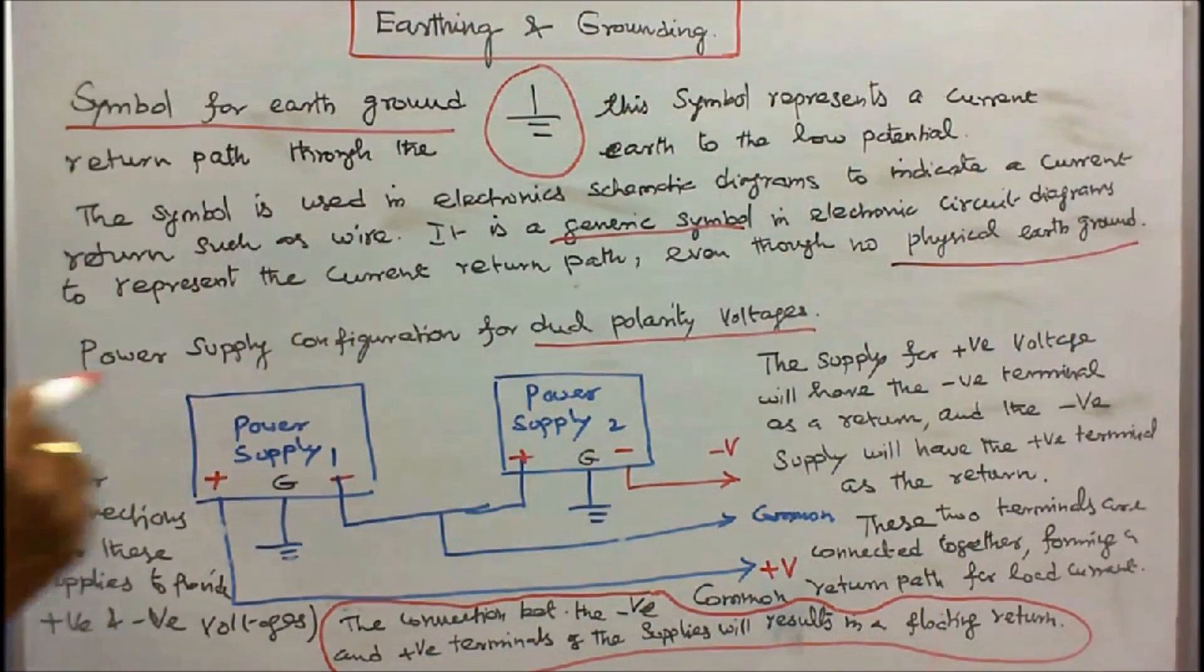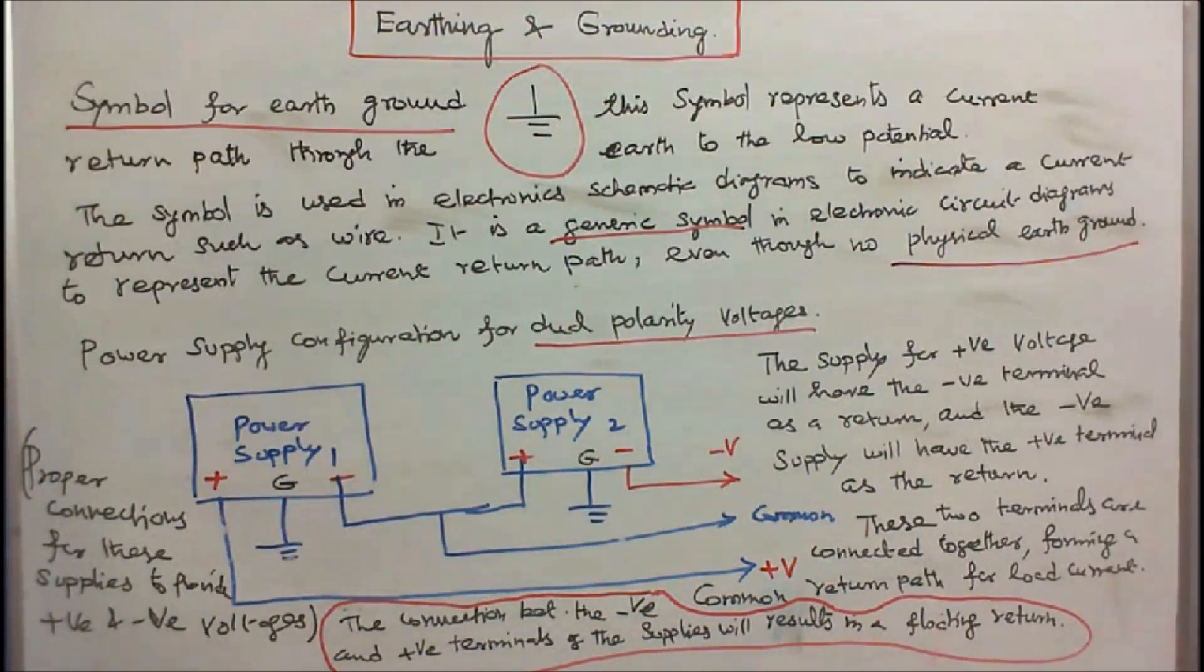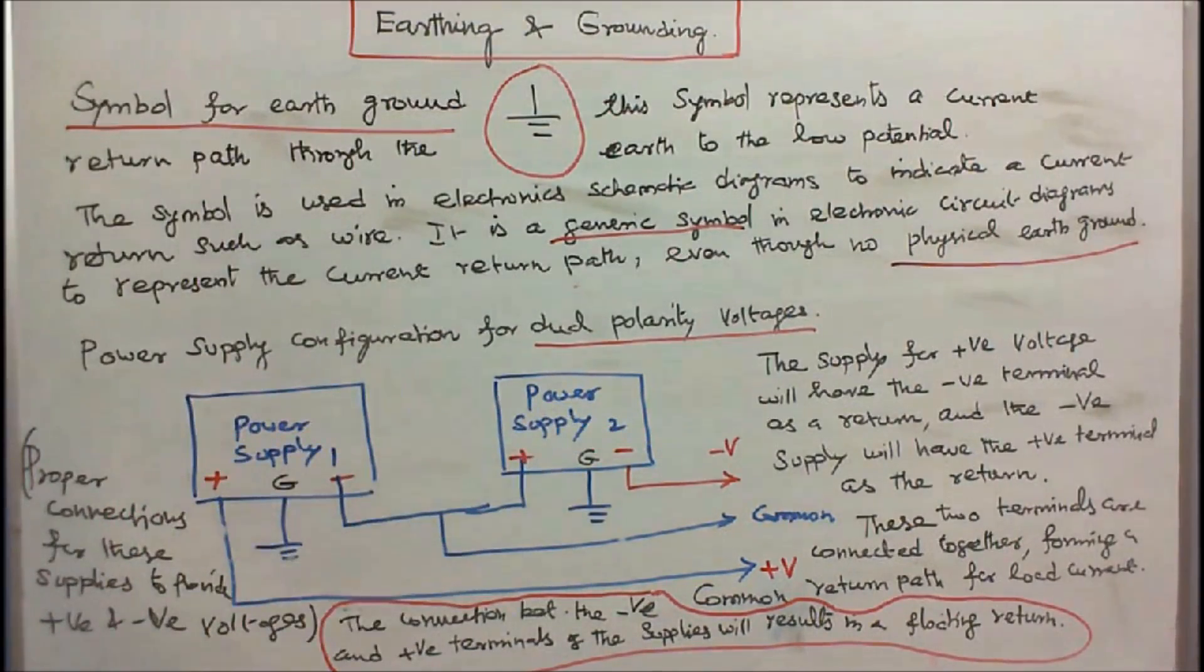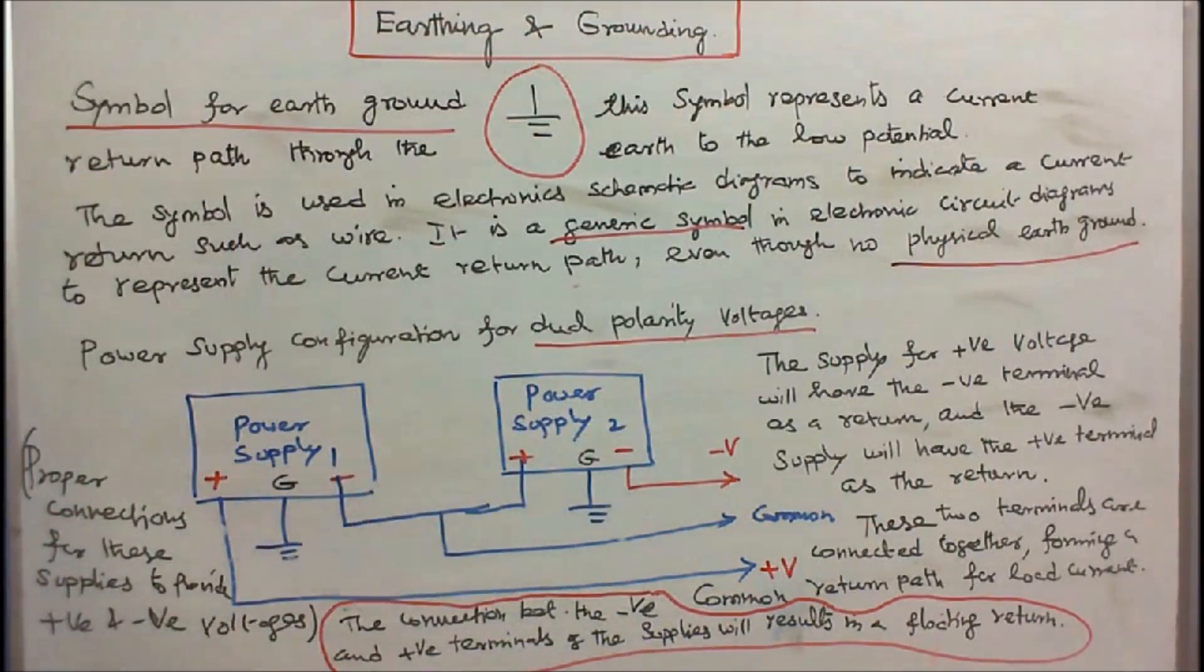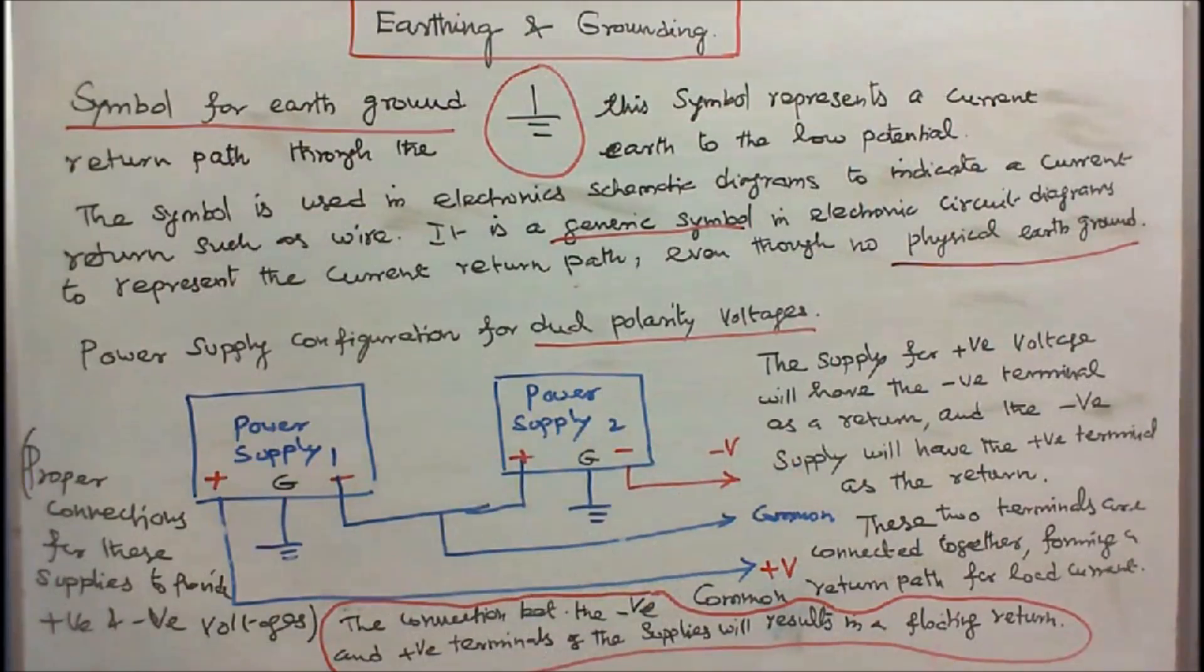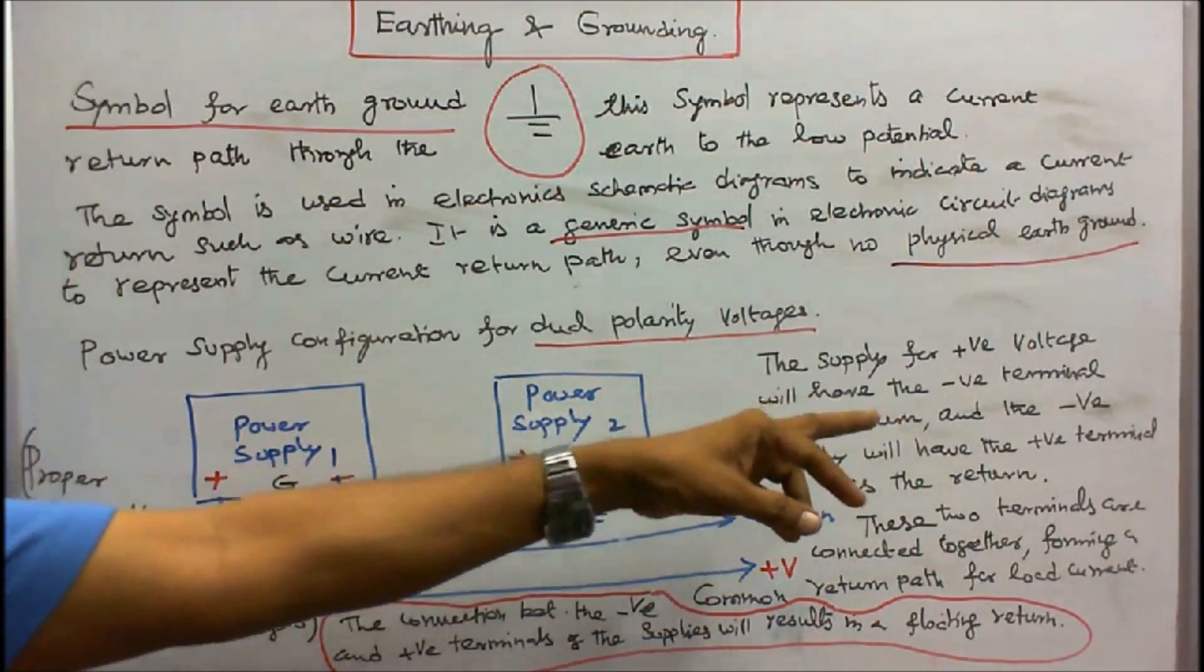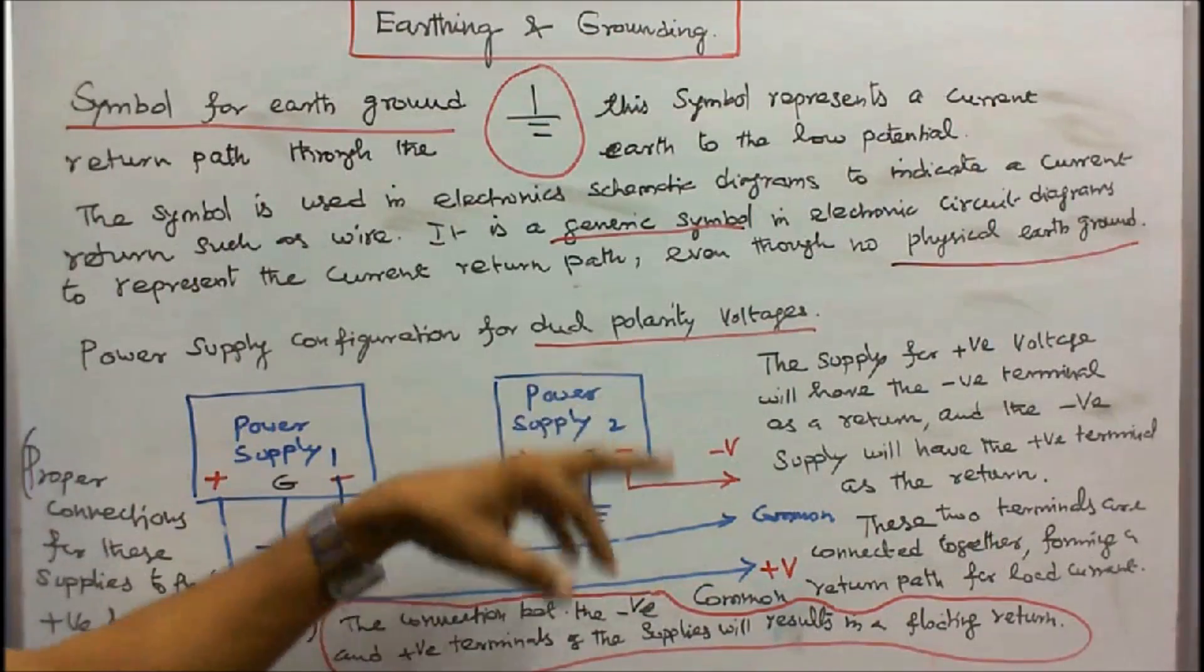This is a power supply configuration for dual polarity voltages. Here two power supplies. This is power supply 1, this is power supply 2. This is positive, this is negative. This is positive, this is negative. This is ground, this is ground. I connect this negative and positive. I make it as a common. I can get positive V and negative V. The supply for positive voltage will have the negative terminal as a return and the negative supply will have the positive terminal as a return.